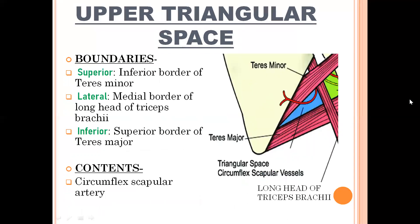The second space is the upper triangular space. It has three boundaries. Superior: inferior border of teres minor. Lateral: medial border of long head of triceps brachii. Inferior: superior border of teres major. Content: circumflex scapular artery, which is a branch of subscapular artery, arising from the third part of axillary artery. Teres minor forms the superior boundary, teres major the inferior boundary, and long head of triceps brachii the lateral boundary.